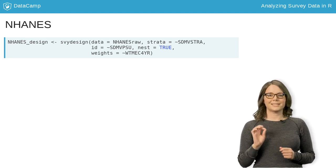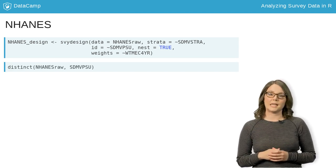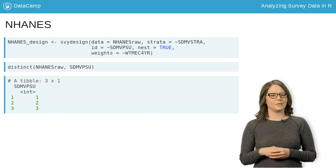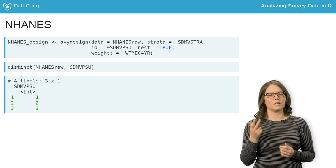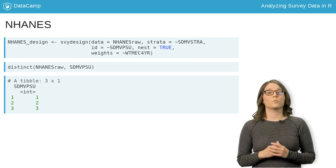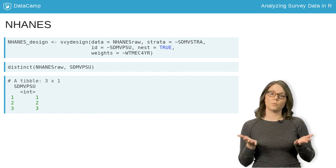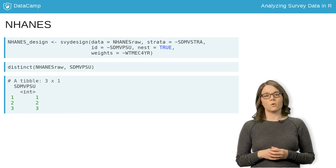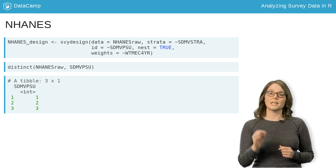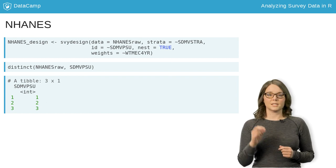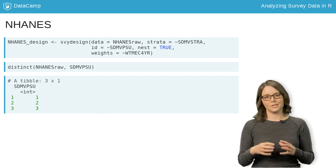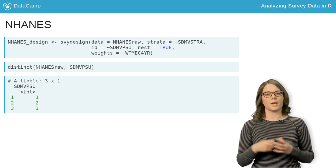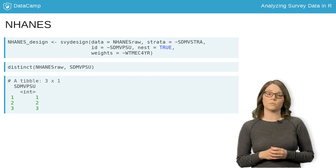Running the distinct function on sdmv-psu, we see it only takes three values: one, two, three. This is because one to three counties were sampled within each strata. Therefore, we must include nest equals true because the cluster IDs are nested within the strata. Lastly, the survey weights are given in weight-mec-4-year.